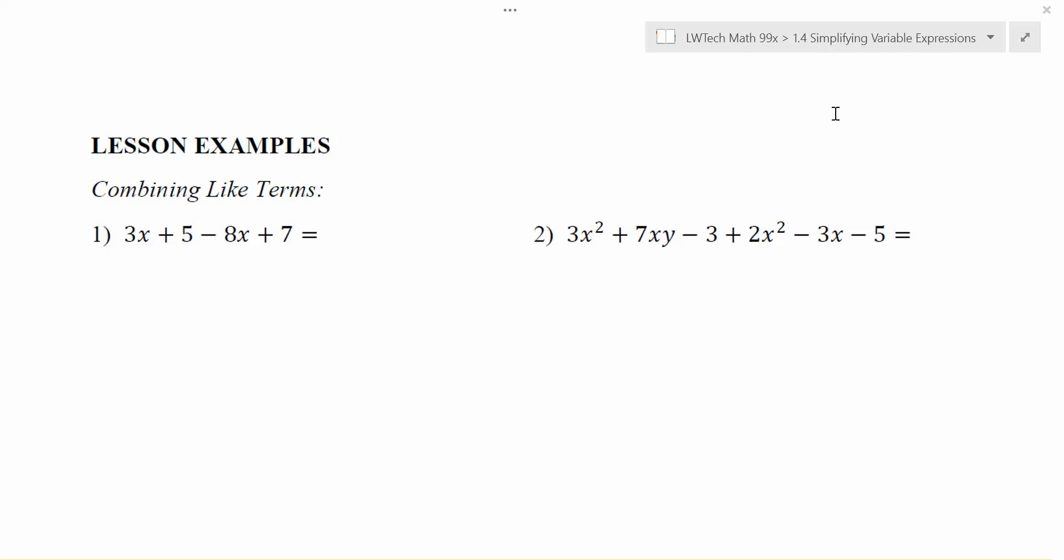One of the things that we always like to do in a variable expression, when we have variables like this, is we would like to try to combine things as much as we can. If you look at a problem like this, 3x plus 5 minus 8x plus 7, notice we have lots of different terms here.